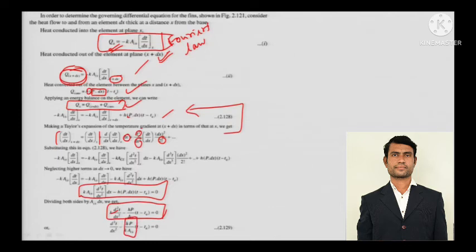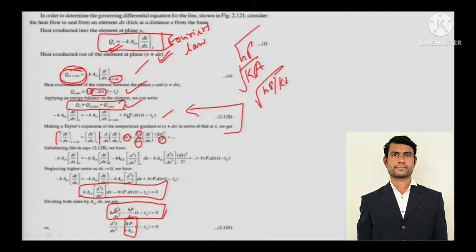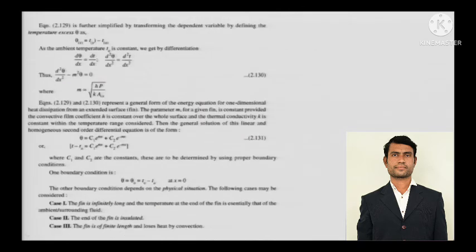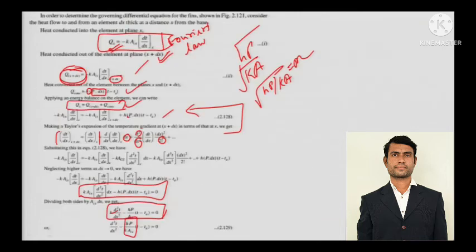The group hP/kA — or more precisely its square root, √(hP/kA) — is the fin parameter represented by m. This is a very important quantity. So the governing equation simplifies using this fin parameter m.